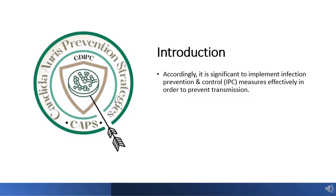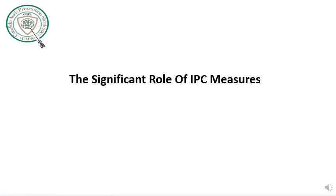Accordingly, it is significant to implement infection prevention and control measures effectively in order to prevent transmission. Do you think that infection prevention and control measures are significant to prevent the spread of Candida auris in healthcare facilities? We will see in the next slide.